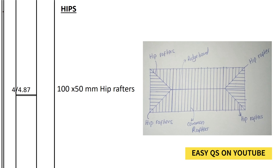Using Pythagoras: c² = a² + b², so c = √(3585² + 3300²). Taking the square root gives a hip rafter length of 4.87 meters. When we fill it in, we have four hip rafters, each measuring 4.87 meters, at 100 by 50 millimeters.